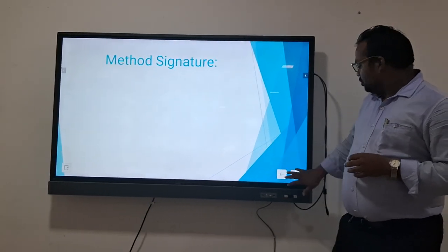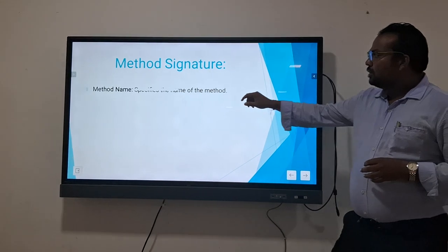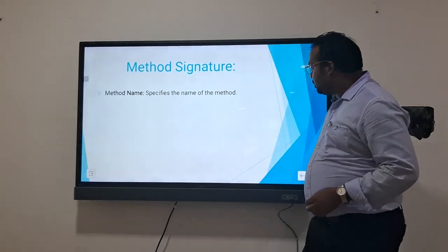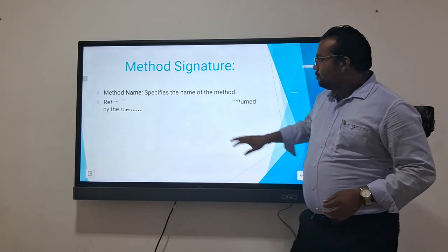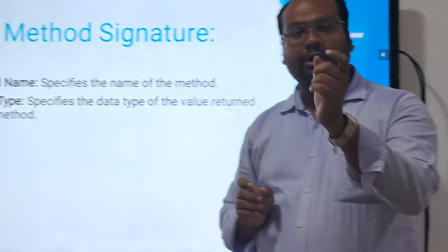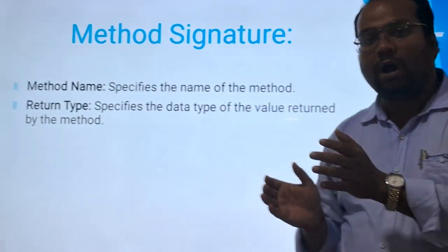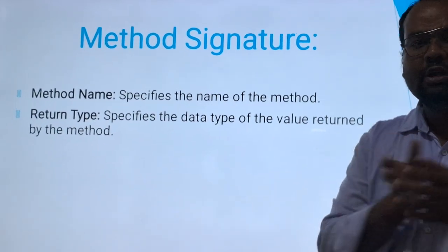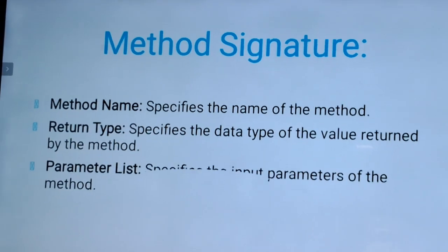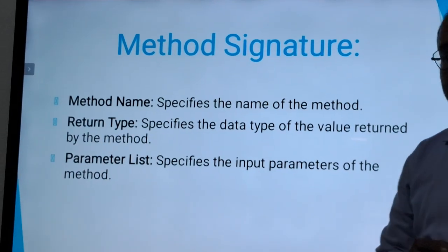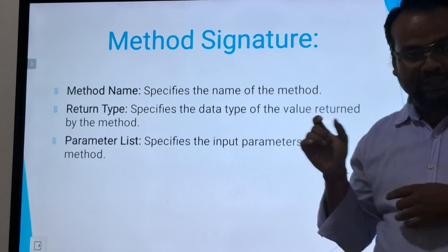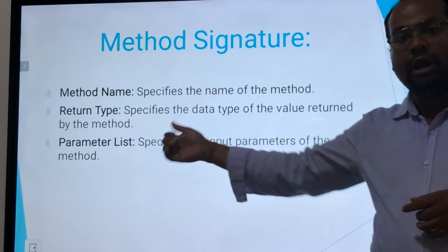For example, the method signature: the method name specifies the name of the method. The return type describes what type of data should be returned — it specifies it. The parameter list declares the parameters which we are going to use in that method.